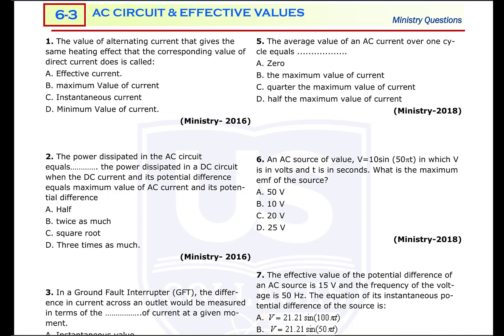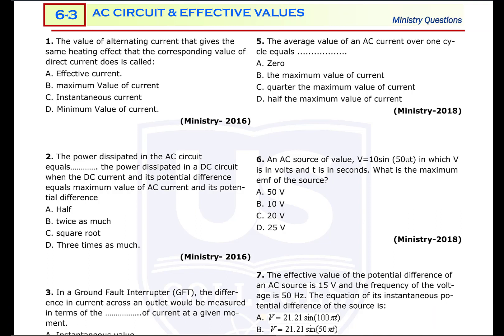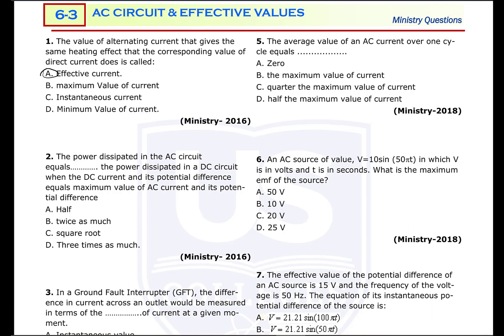We are going to answer the mystery questions about AC circuits and effective values. The first question: the value of alternating current that gives the same heating effect as the corresponding value of direct current is called the effective value. Effective value is the amount of direct current that gives equivalent heating effect to an alternating current.